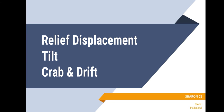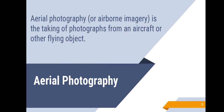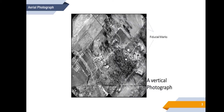We are all familiar with aerial photography. It is nothing but the taking of photographs of the surface from an aircraft or other flying objects. Before going to the current topic, I would like you to recall some of the terms such as fiducial marks and the three photo centers — the nadir point, principal point and the isocenter.